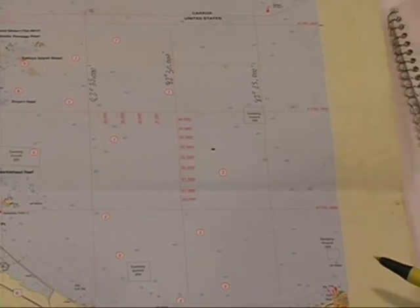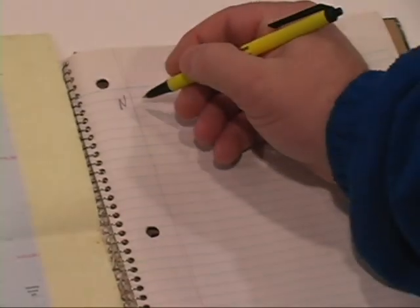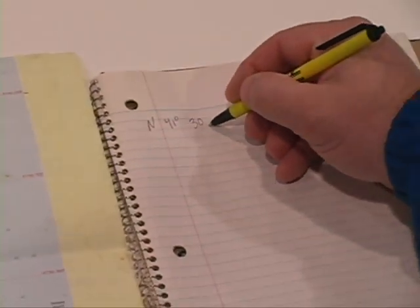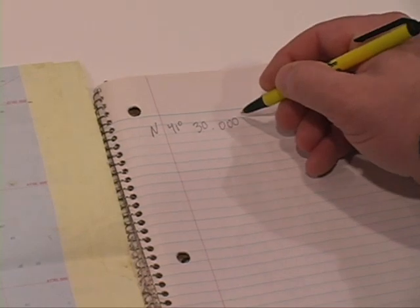That's 41 degrees 30.000 minutes. So what I do is I write that on a piece of paper so I write north 41 degrees 30.000 minutes. That is my known latitude.